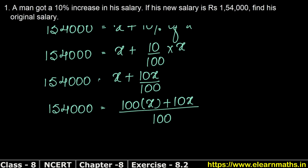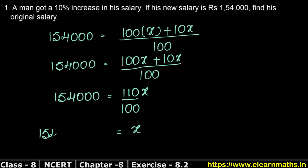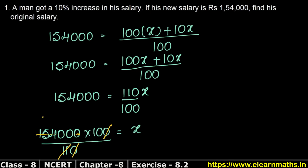So 1,54,000 equals 100x plus 10x upon 100, which gives 1,54,000 equals 110x upon 100. Moving 100 to the other side: 1,54,000 multiplied by 100 divided by 110. Cancelling common factors, 11 fours are 44 with three zeros.